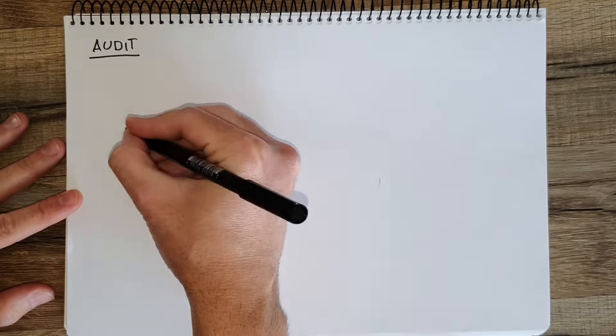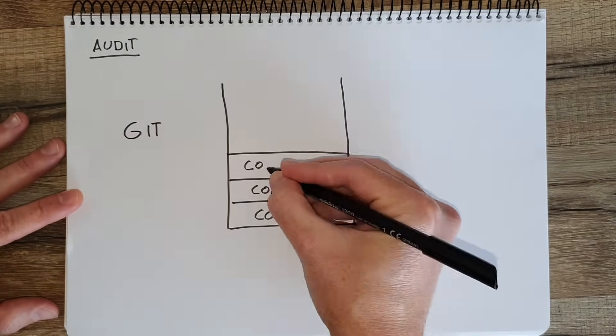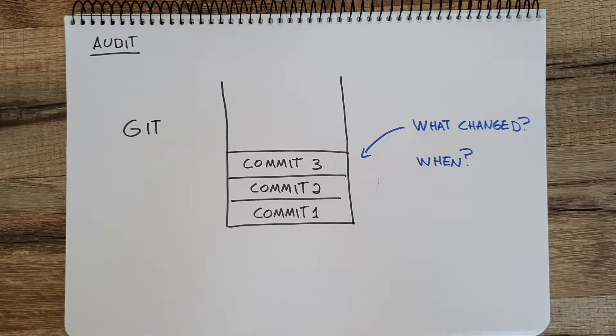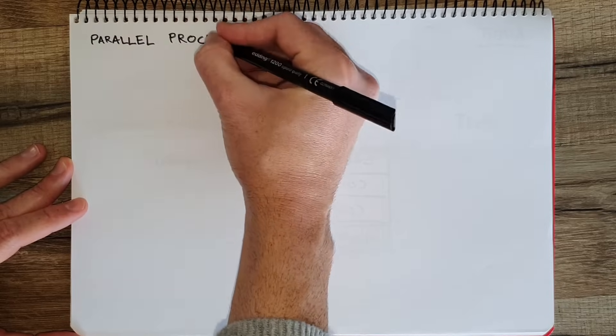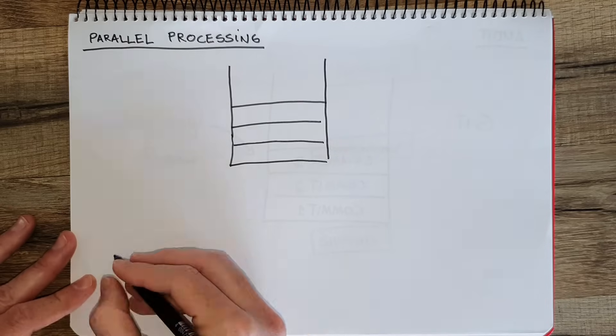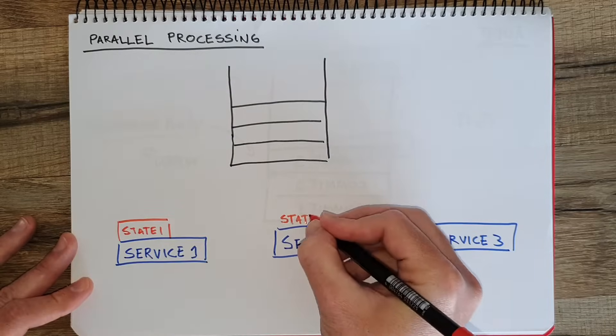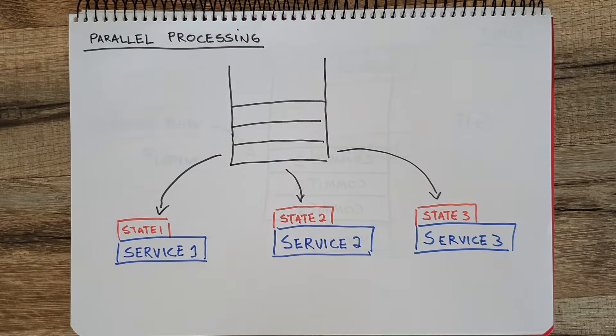So when is event sourcing useful? Event sourcing is useful in different scenarios. For example, when you want to have an audit log — when you want to keep track of what has happened in the past. Like in repositories when you're using GitHub or Git, you can see what happened and when changes occurred. So for audit purposes, event sourcing is great. Then we have parallel processing. If you have multiple systems reading from the same data source, this is really good because you can duplicate information in different systems very efficiently, and it's especially useful when you have more readers than writers, because each service can read from the event log and store the state on its own.